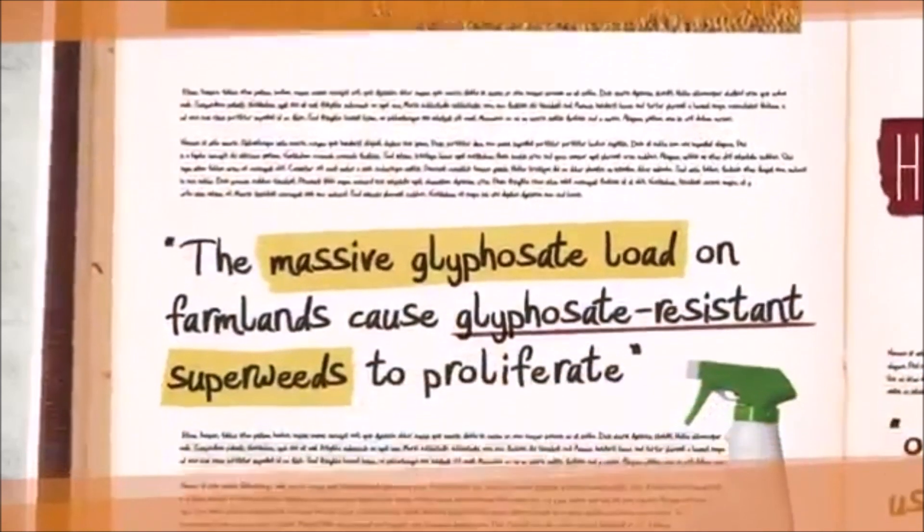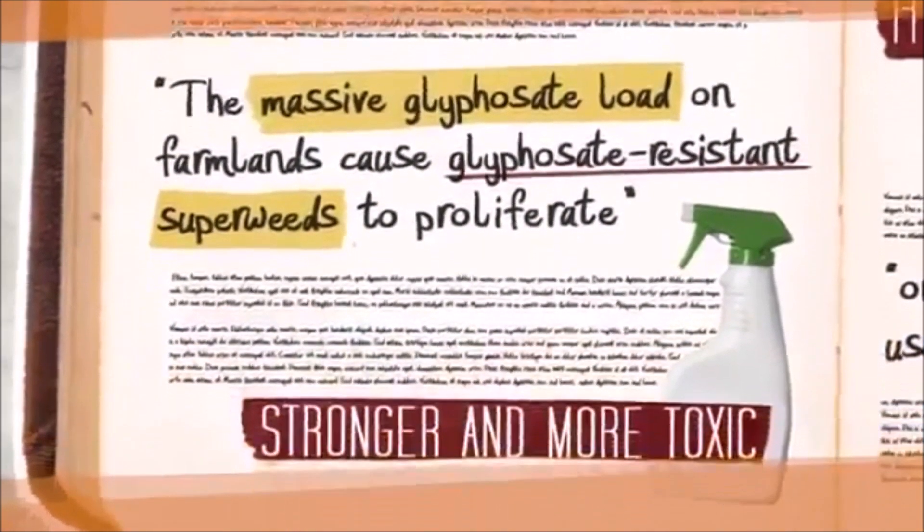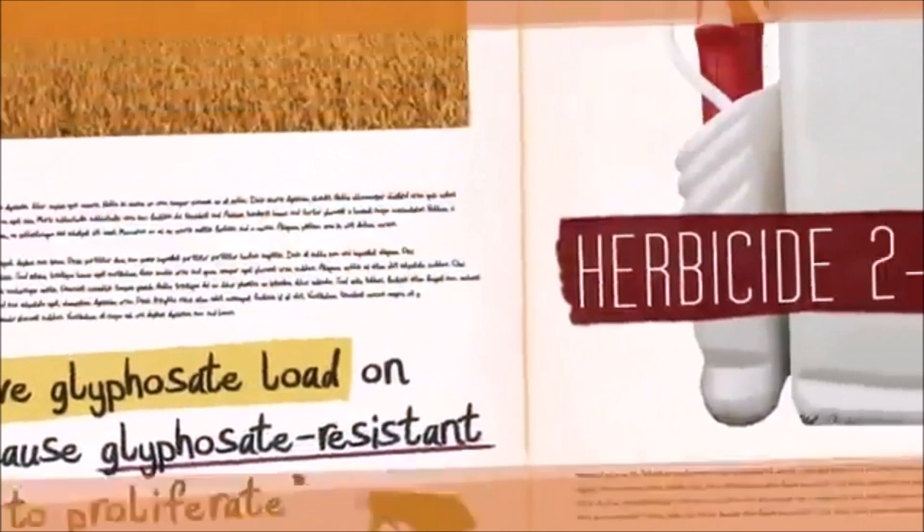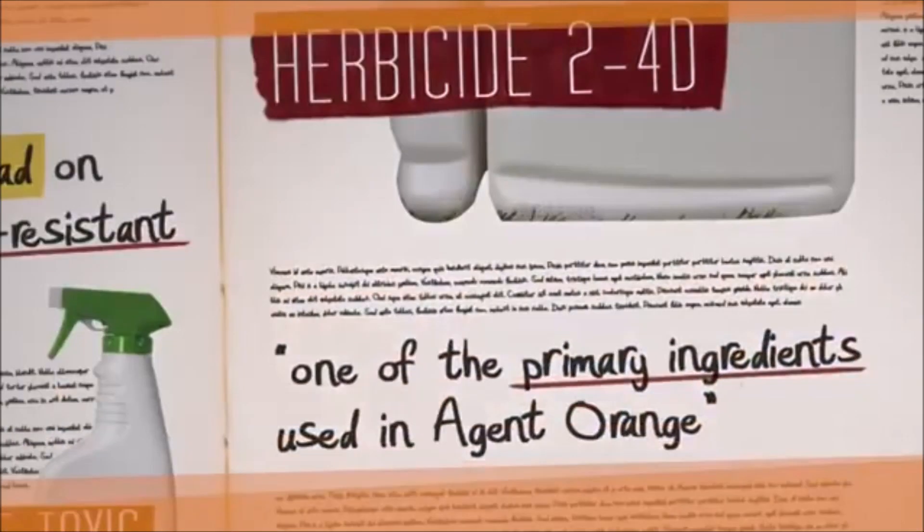The massive glyphosate load on farmlands cause glyphosate resistant superweeds to proliferate, prompting use of stronger and even more toxic pesticides. Due to glyphosate resistance, new traits have been developed to use the herbicide 2,4-D, one of the primary ingredients used in Agent Orange.